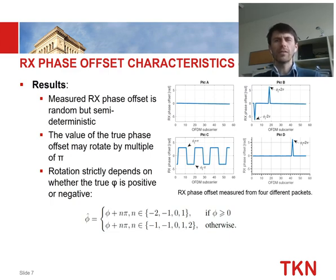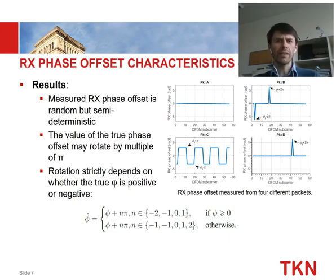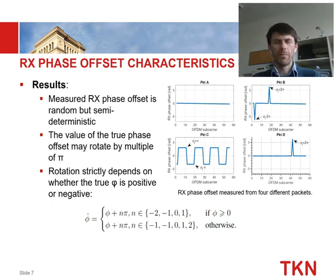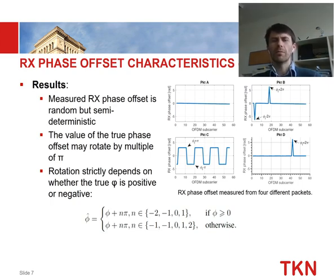Here are the results. The figure shows four arbitrarily selected packets, with OFDM subcarrier on the x-axis and the receive phase offset between antenna A and antenna B on the y-axis. Packet A is correct — the phase offset is around zero, as expected since cable lengths were equal. Packet B is different, with two subcarriers showing incorrect phase offset. Packet C is worse, with multiple subcarriers having incorrect phase offset, and similarly for packet D. Looking closely at the data, the true phase offset appears to be rotated by multiples of pi — a random phase rotation by pi.